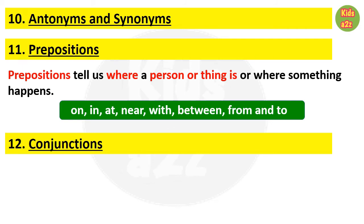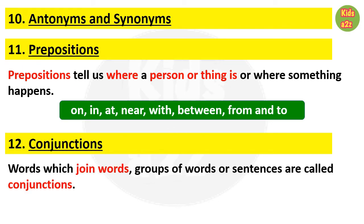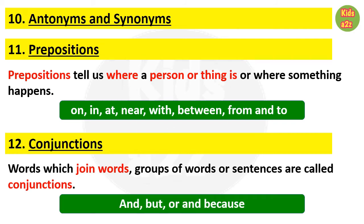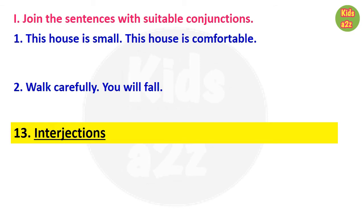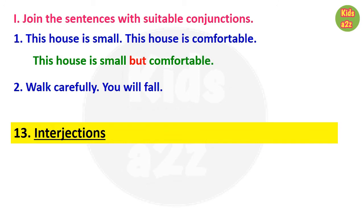The next topic is conjunctions — joining words. 'And,' 'but,' 'or,' and 'because' are some commonly used conjunctions. For the questions, kids need to join sentences with suitable conjunctions. First: 'This house is small. This house is comfortable' can be joined as 'This house is small but comfortable.' Second: 'Walk carefully. You will fall' can be joined as 'Walk carefully or you will fall.'